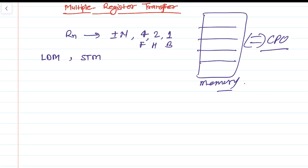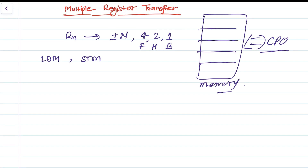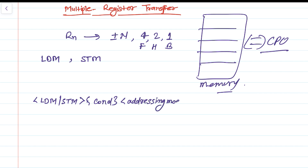Now let's look at the syntax of this type of instruction. The syntax is as follows: we have LDM or STM, then we have an optional condition code, then we have a mandatory addressing mode, then we have the Rn base register, and then the total set of registers.